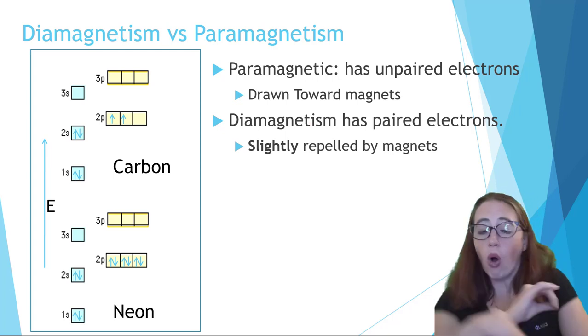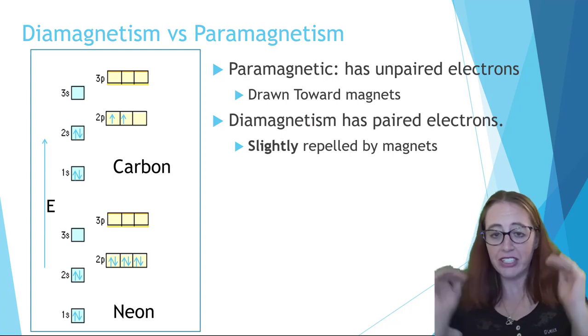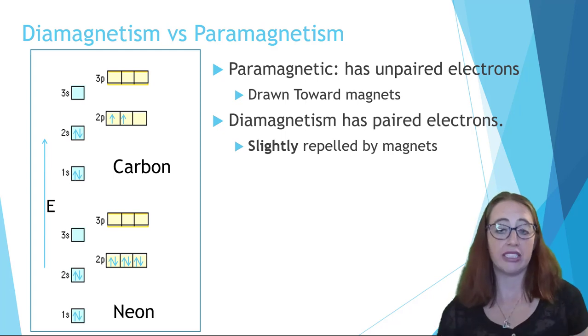So those with only paired electrons, so every single electron has a pair, are called diamagnetic.